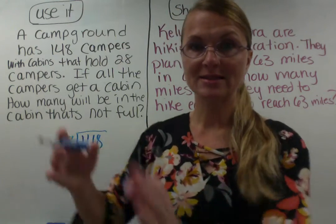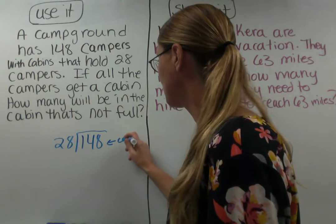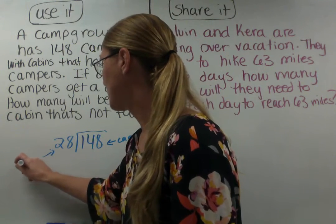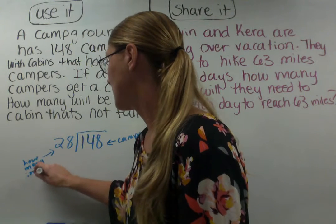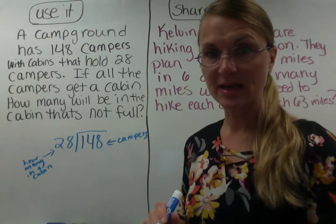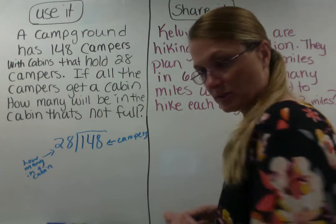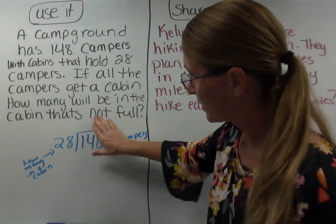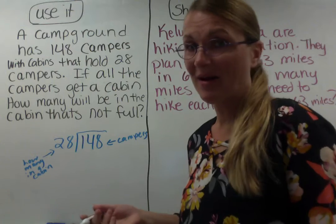Each cabin gets a group of 28. It's still important to know what each thing stands for — this is our total campers, and this is our campers per cabin. So how many fit in a cabin? Which means the answer up here will tell us how many cabins we need, or how many cabins we're going to be using. So, to work our way through this: can 28 go into 1? Nope. Can it go into 14? Nope. Can it go into 148? Sure — let's figure out how many times.